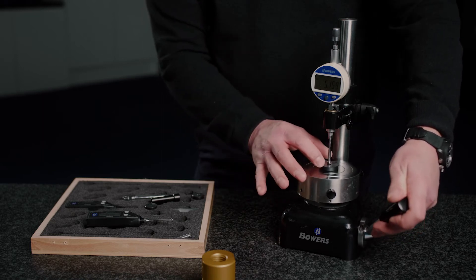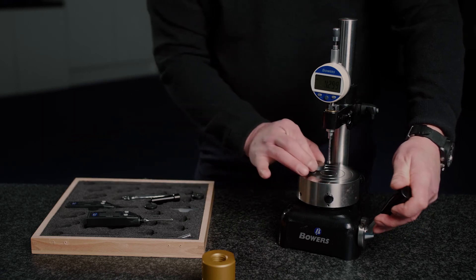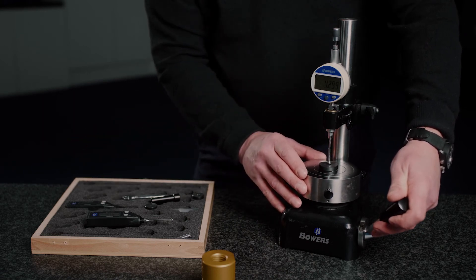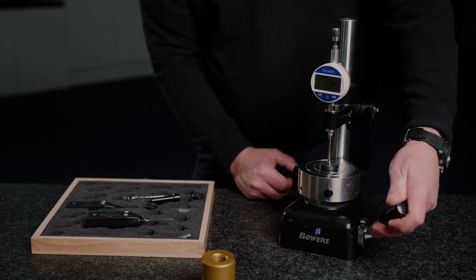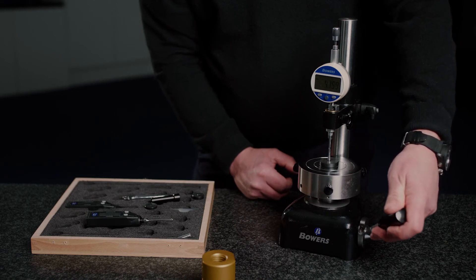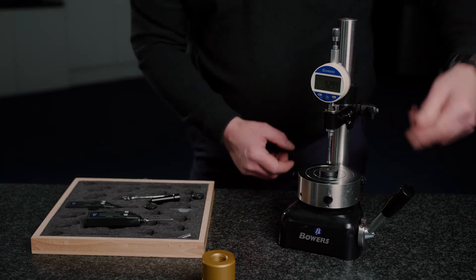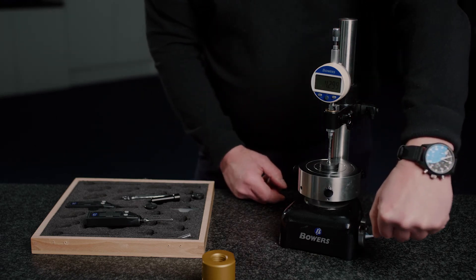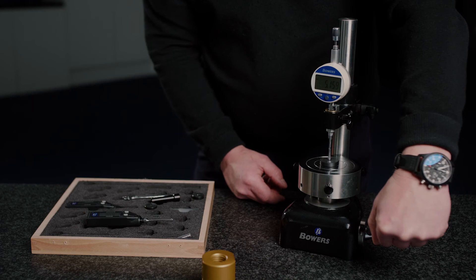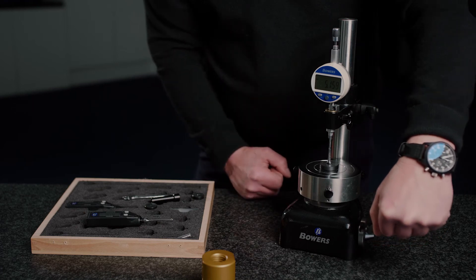So there is no skill required here. I can take this component off, bring the next one in and allow the gauge to align itself. Obviously we've got adjustment here and we can set stops so that the operator comes down to a fixed stop and doesn't crash the probe into the table.